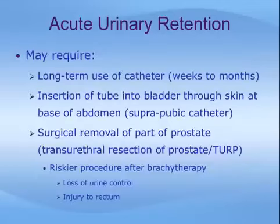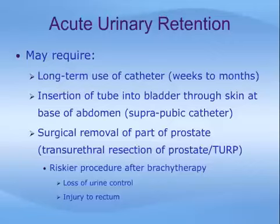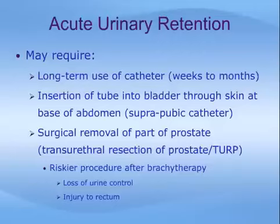In rare cases, urinary retention may require the long-term use of a catheter, placement of a suprapubic catheter through the skin at the base of the abdomen, or surgical removal of part of the prostate called a transurethral resection of the prostate or TURP. If this surgical procedure is required, the surgeon must be especially careful, as it is riskier after brachytherapy than in non-radiated men — with a higher chance of causing permanent loss of urinary control or damage to the rectum.